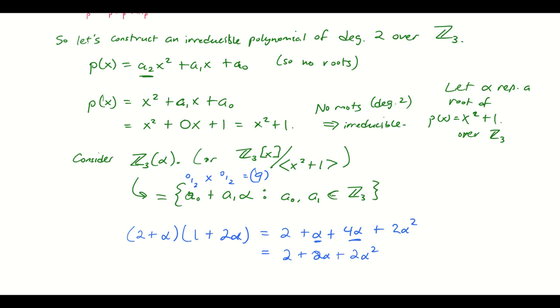But now, wait, what about alpha squared? We didn't say anything about alpha squared when we set this up. Hopefully I can translate that into something of the form a0 plus a1 alpha. Anyway, so what do I do with alpha squared?